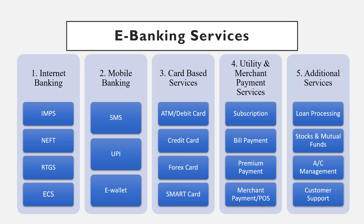RTGS is meant for bulk payment. The minimum transfer amount should be more than Rs. 2 lakhs. Here also, the recipient's or beneficiary's details must be added previously. In case of ECS, the Electronic Clearing Service, fund can be transferred from one sender to multiple recipients — for example, payment of salary by the government to a large number of employees, or payment of dividend by a company to multiple shareholders, or payment of interest by a bank to a large number of customers.